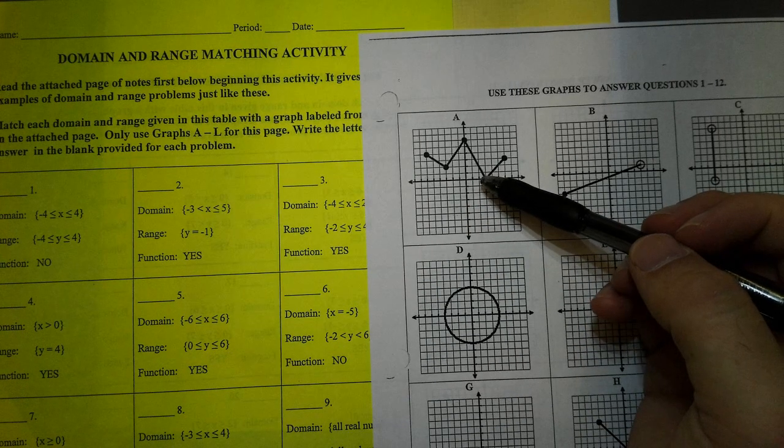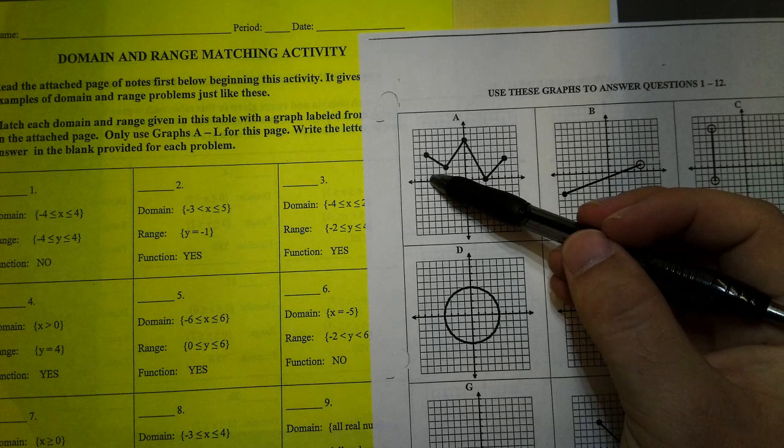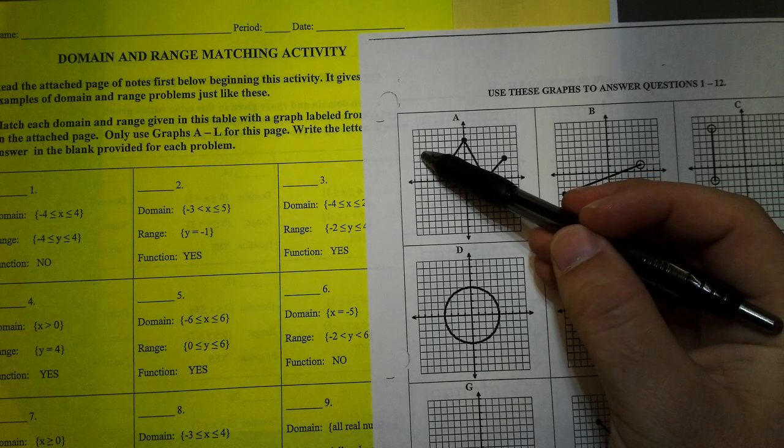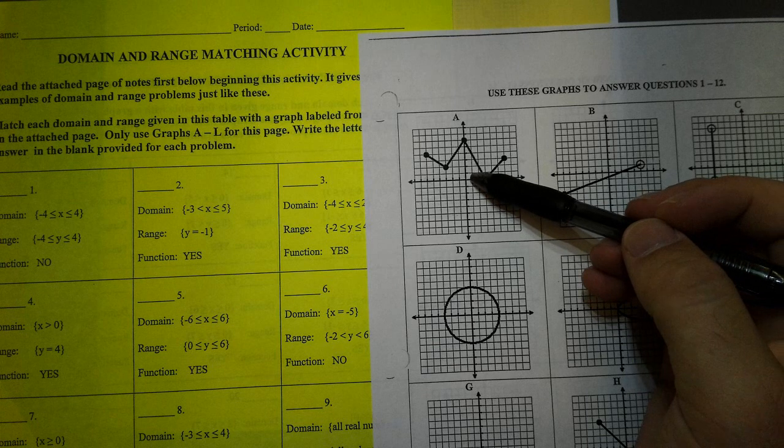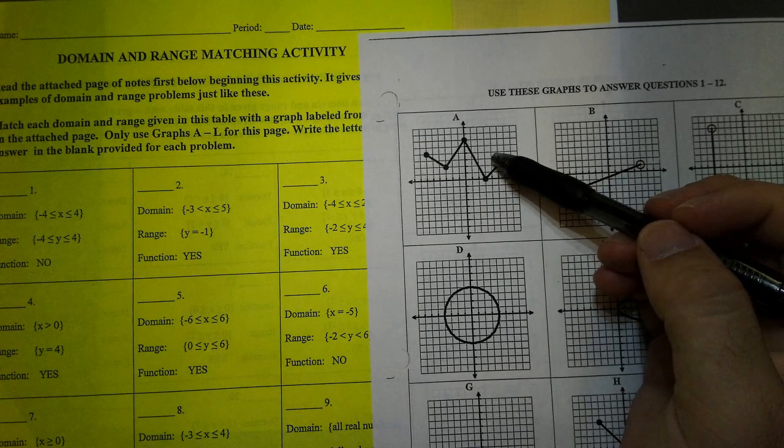Remember, the domain is left and right. So if I go left, 1, 2, 3, 4, 5, 6, it goes to negative 6. If I go right, 1, 2, 3, 4, 5, 6, it goes from negative 6 to positive 6.